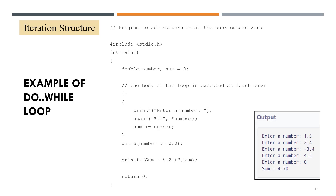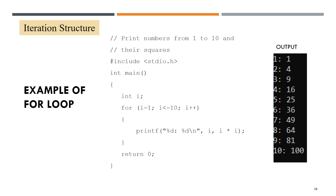Next, an example of using a do-while loop — a program to add numbers until the user enters zero. Next, an example of using a for loop to print numbers from 1 to 10 and their squares.